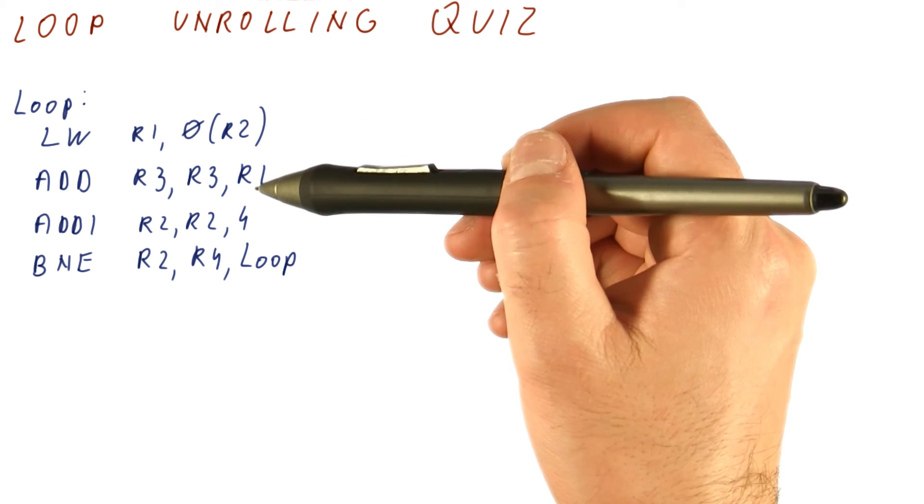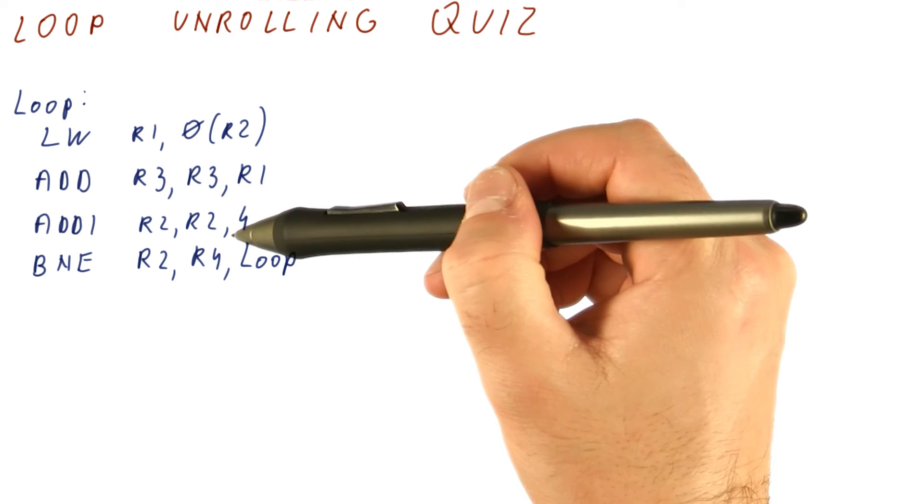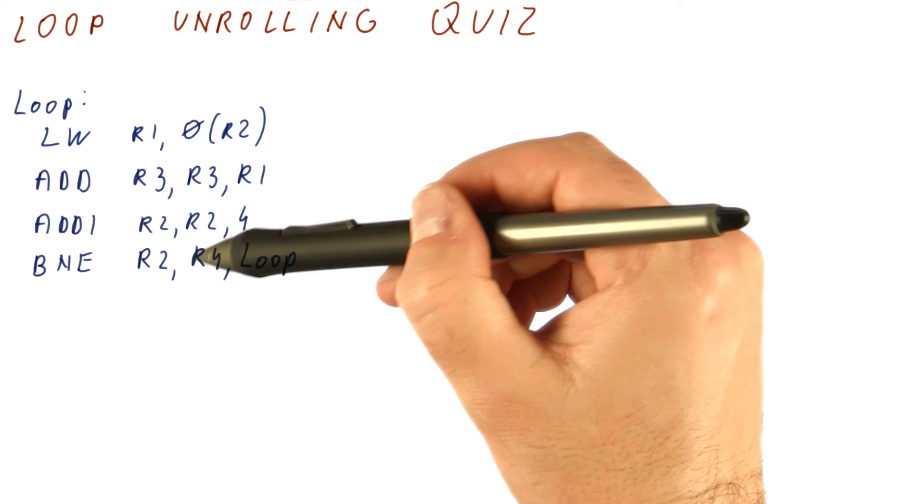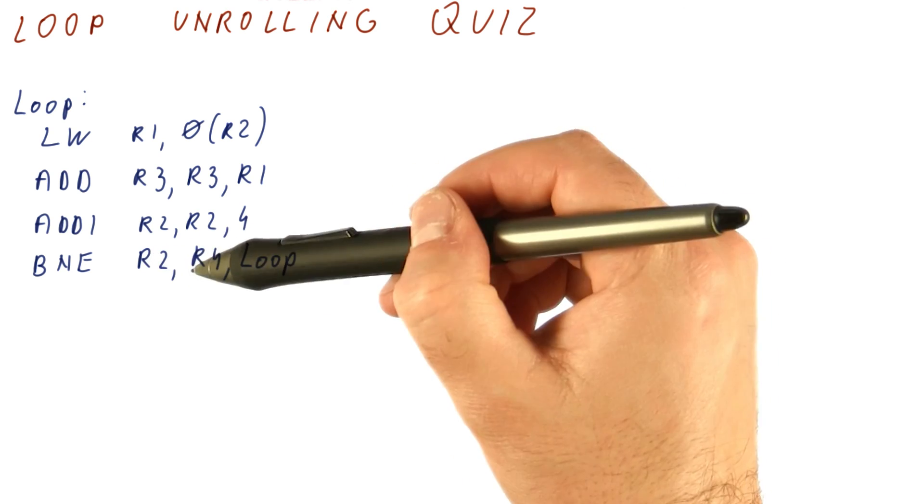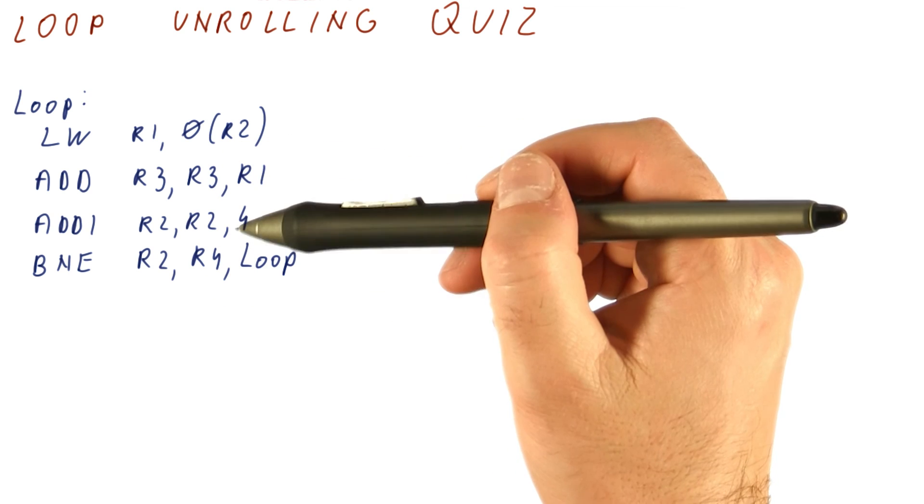We load something from memory, add it to a sum in R3, and then move our memory pointer by four bytes. If we have reached the end of an array, we exit. Otherwise, we loop back. So what this loop is doing is summing up an array.